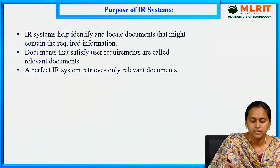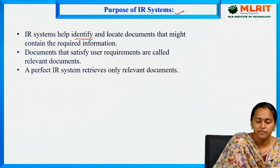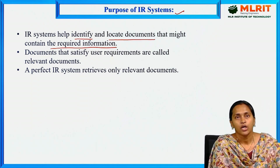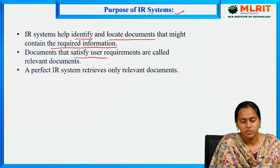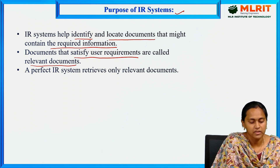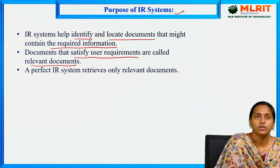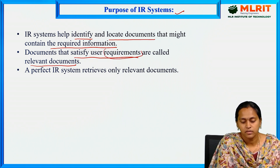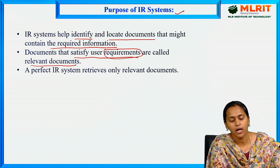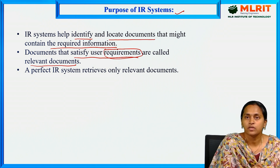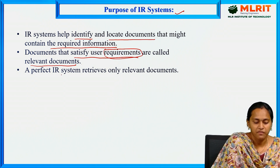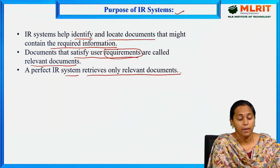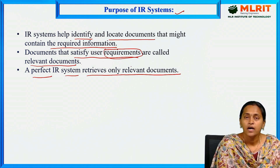The purpose of IR systems: the IR system helps identify and locate documents that might contain the required information. Documents that satisfy user requirements are called relevant documents. A system must satisfy the user requirements — then only it is called a relevant document. A perfect IR system retrieves only relevant documents.